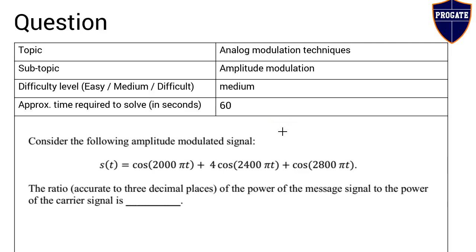This question belongs to the topic of analog modulation techniques. The subtopic is amplitude modulation. The difficulty level of this question is medium, and the approximate time required to solve it is 60 seconds.